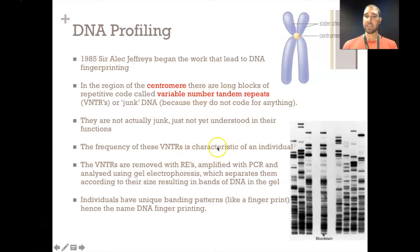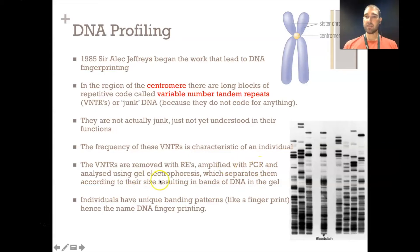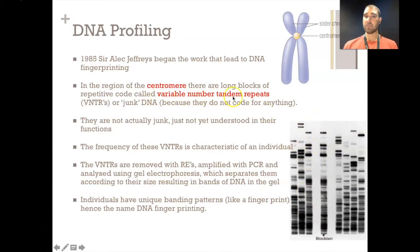Different individuals have different numbers of these in different locations. We can use restriction enzymes — molecular scissors — which cut DNA in specific sequences. We can amplify those cut bits with PCR, and then analyse them using gel electrophoresis. This separates the DNA into bands based on the length of the DNA section, and everybody has their own different banding pattern. We can use that to solve crimes in forensic science. For example, everybody has an individual fingerprint banding pattern based on the number of VNTRs and their lengths, and you can compare that — so we can see that this blood stain matches up with this sequence here.